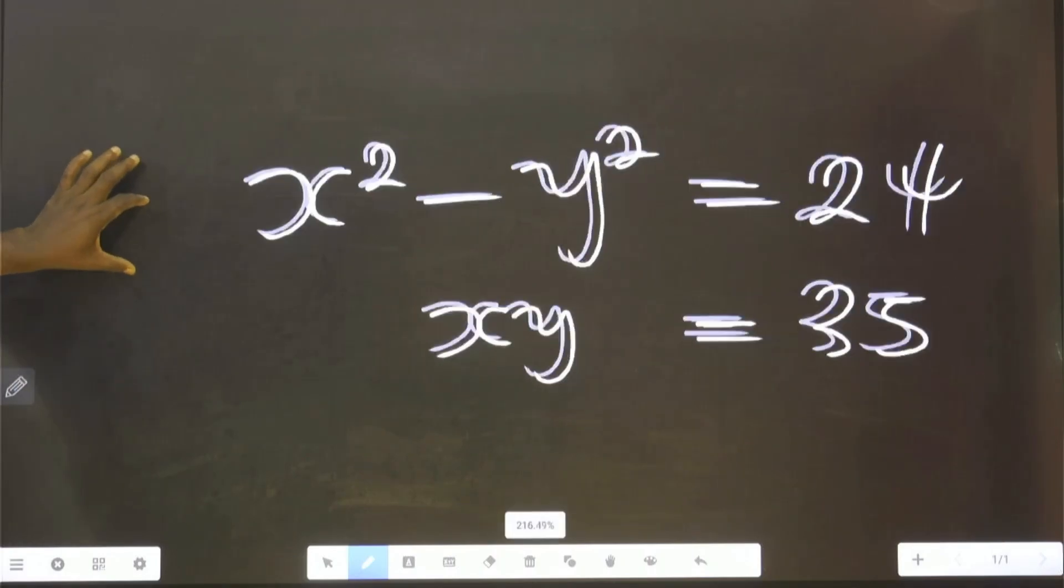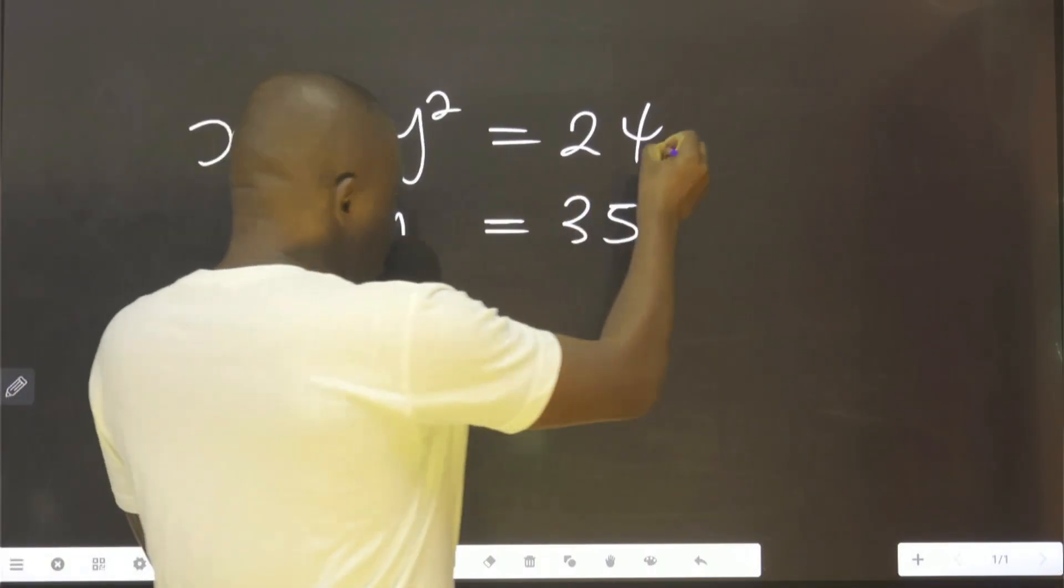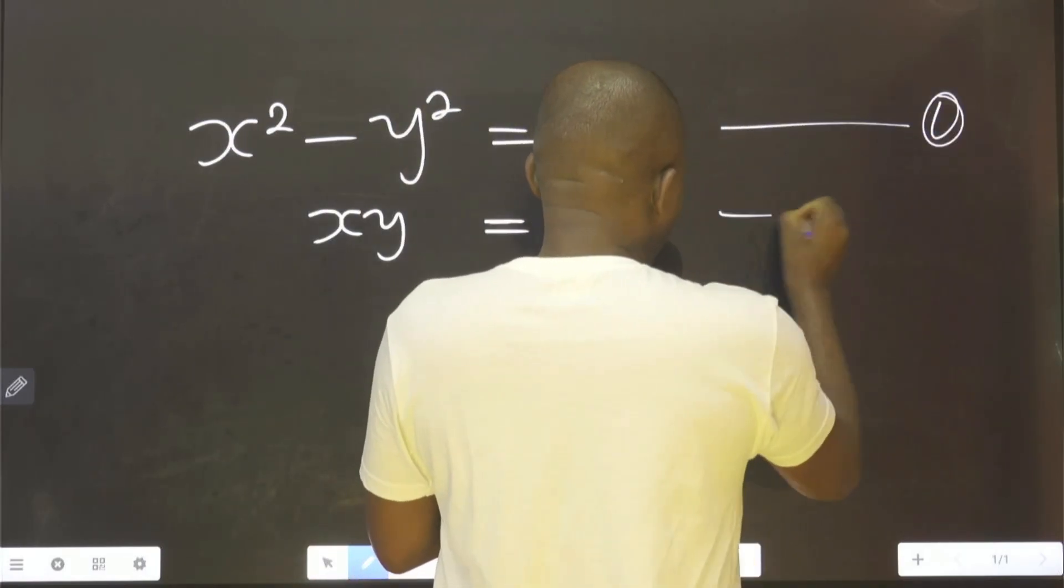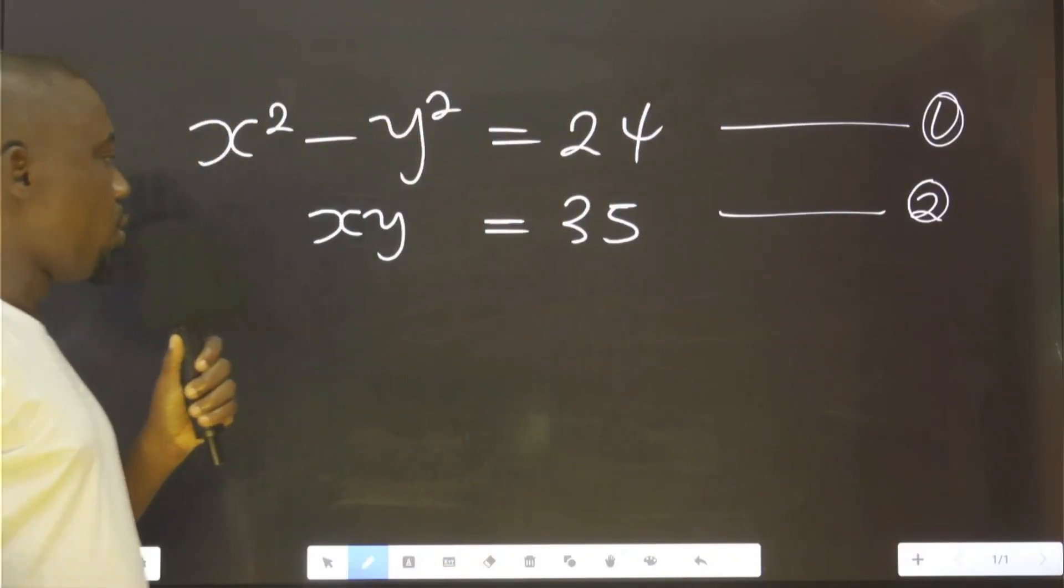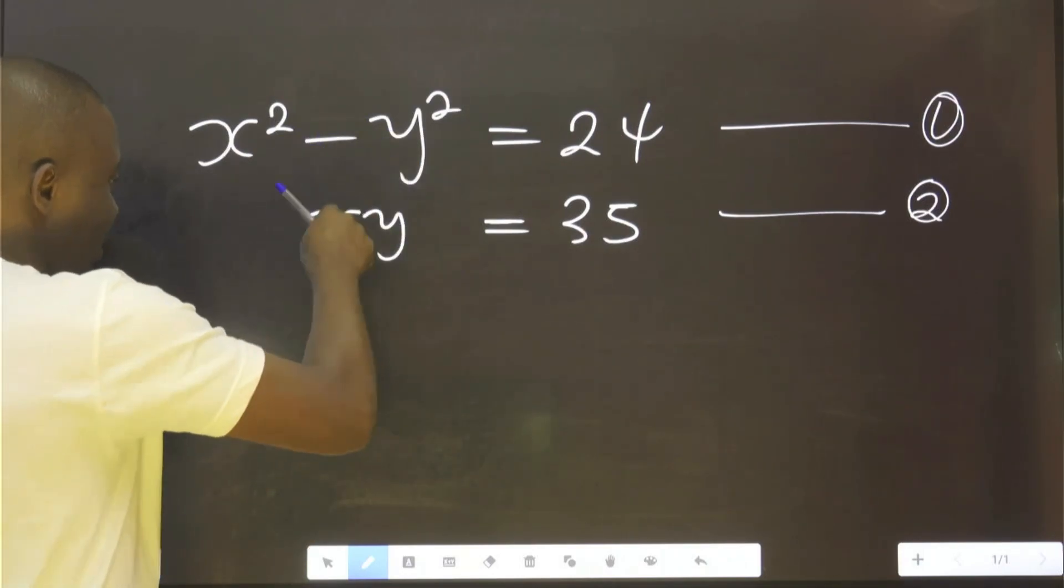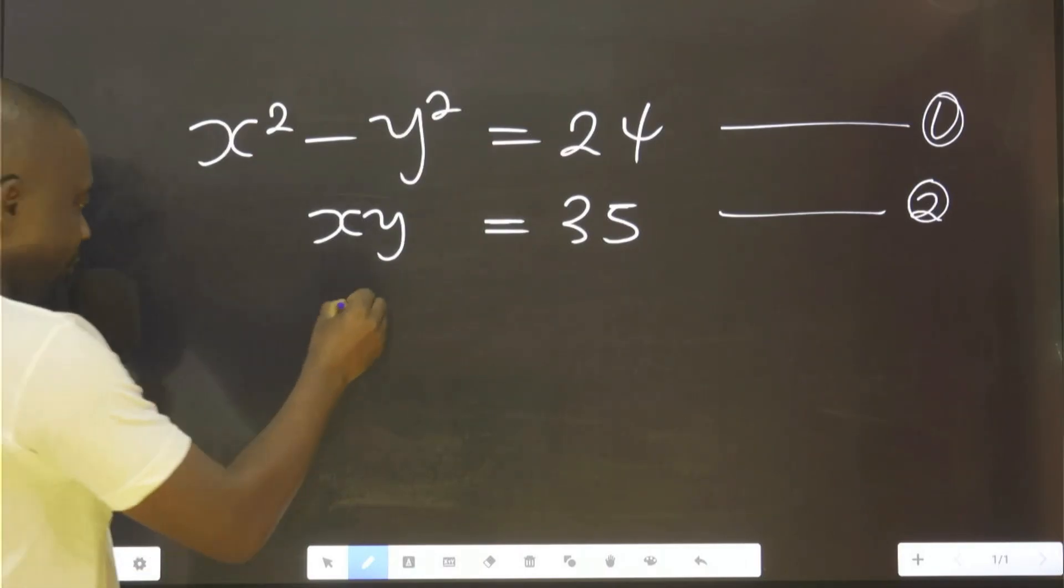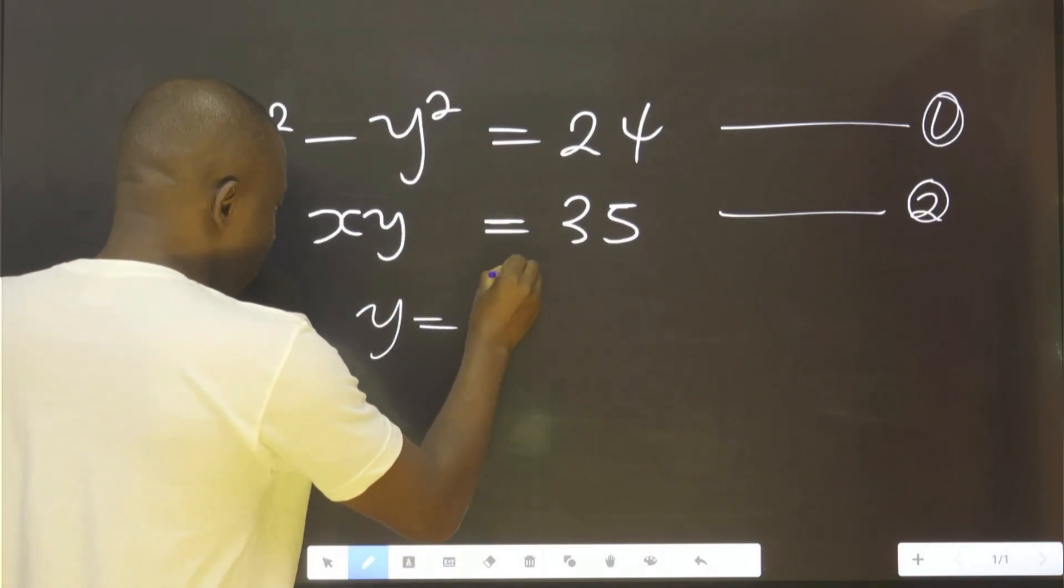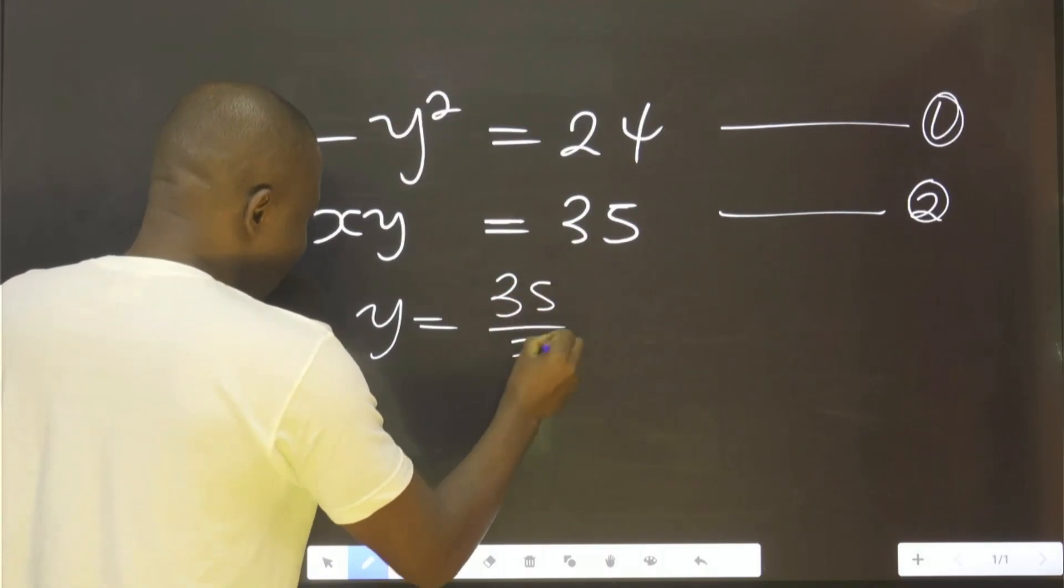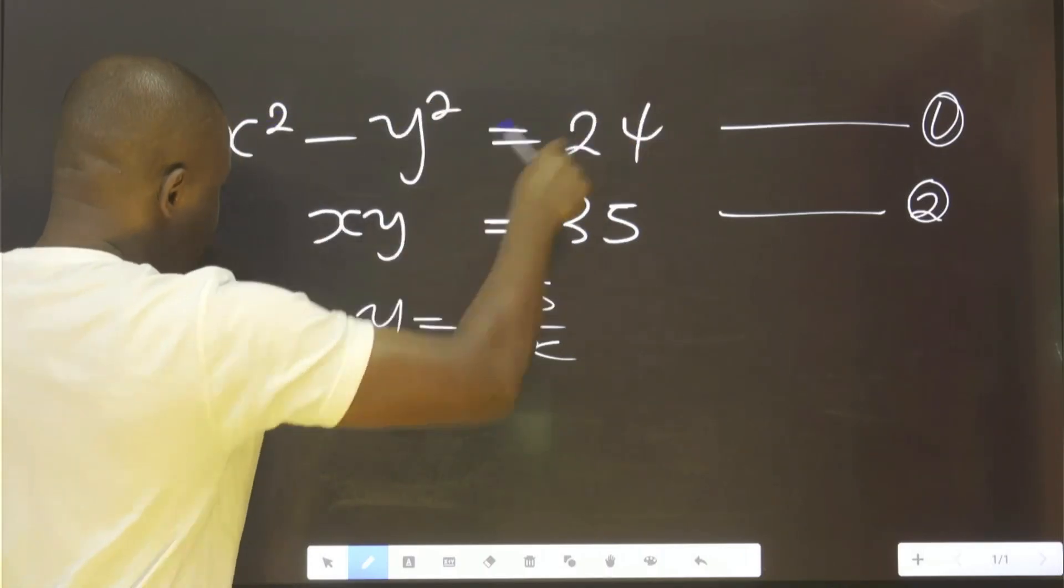So what we're going to do now, we're going to call the first one equation 1, the second one equation 2. What we need to do first, let's from equation 2 find y. So y = 35/x. Let's substitute this into equation 1.